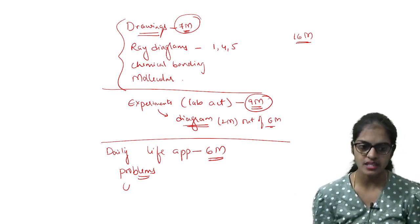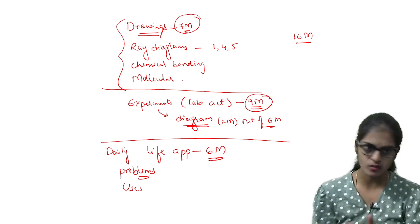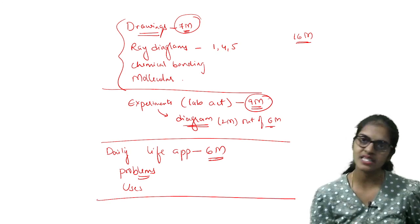Or they may ask you uses - uses of bleaching powder, uses of baking soda. So all the uses you will have to learn. Very few you have. And this will give you six marks.